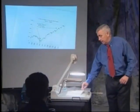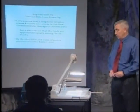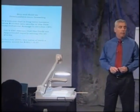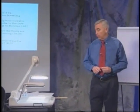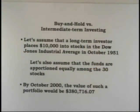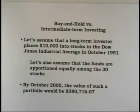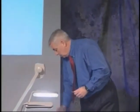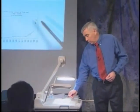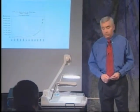To take advantage of that trend, you'd want to buy a stock index at the end of October and hold it through the end of April. We've done studies on just that. If you invested $10,000 at the end of October in the Dow average starting in 1951, by October of 2000 that $10,000 would have grown to $380,000.